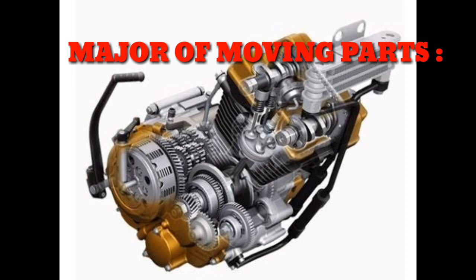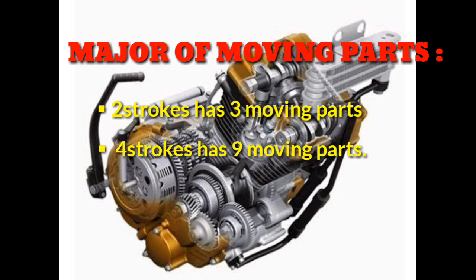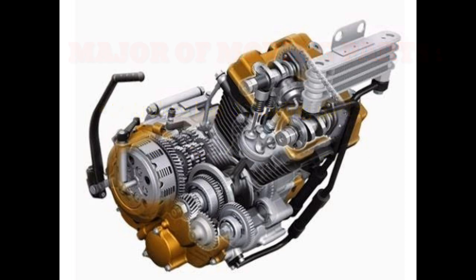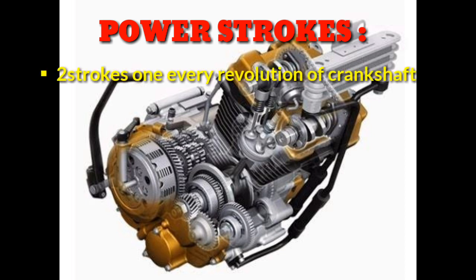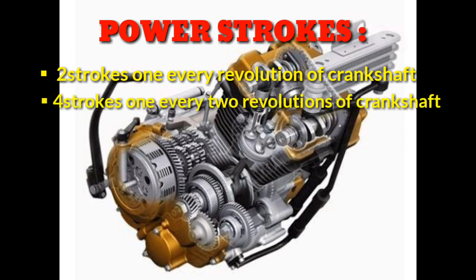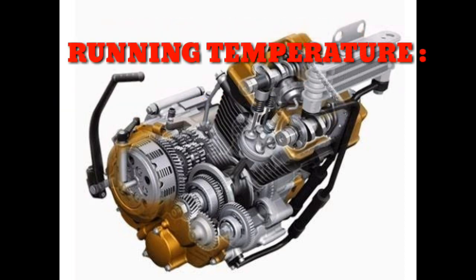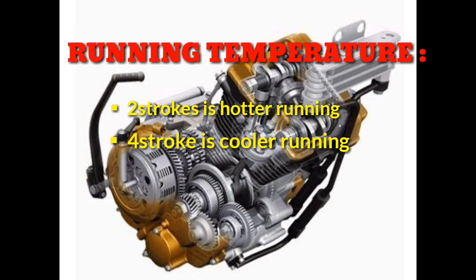Number of moving parts: two-strokes have three moving parts, four-strokes have nine moving parts. Power strokes: two-strokes fire every revolution of the crankshaft, four-strokes fire every two revolutions of the crankshaft. Running temperature: two-strokes run cooler, four-strokes run cooler.